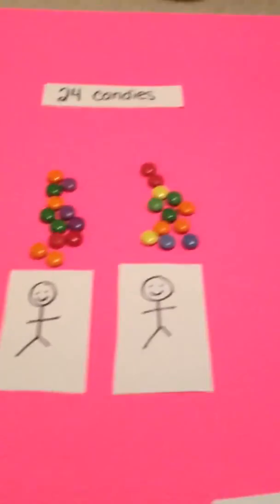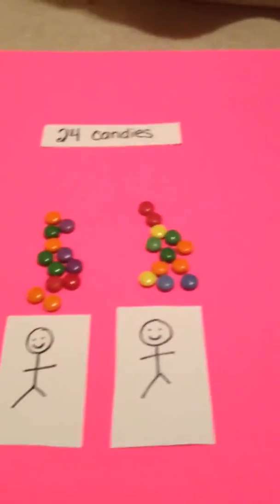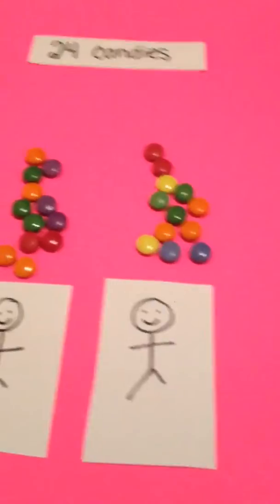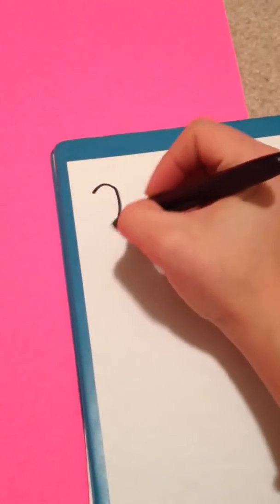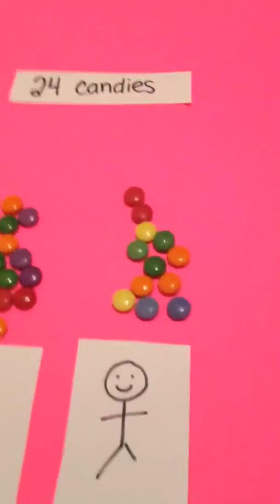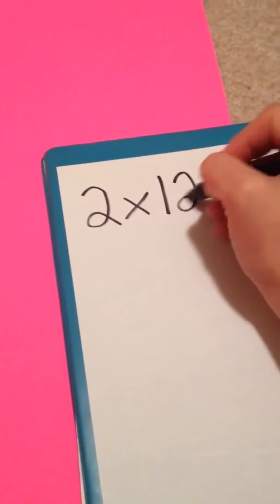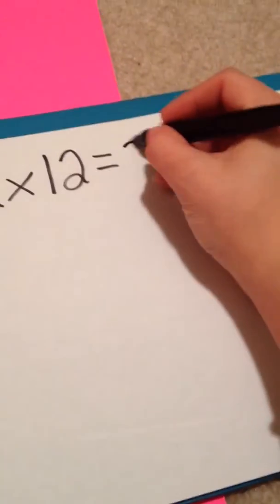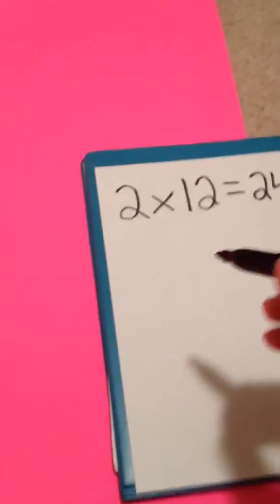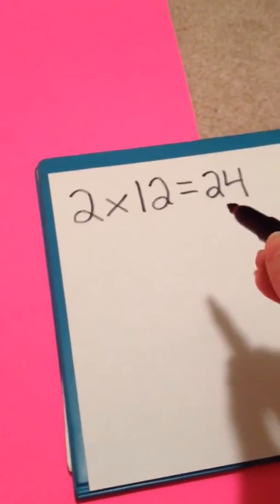If I was to write a math equation to show this, it would look like this. I have how many groups here? 2. So 2 times how many each of them have in their group was 12, and I haven't eaten any candies in the meantime, so I should still have 24 candies. So 2 times 12 equals 24.